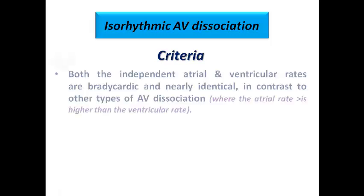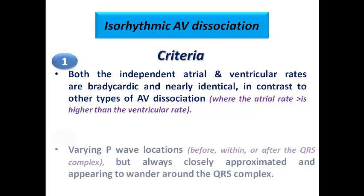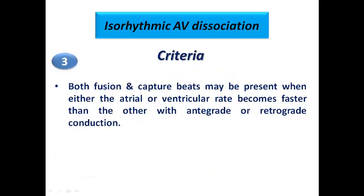Let's summarize the diagnostic criteria. First, the atrial rate and ventricular rate are equal — explaining the one-to-one AV relationship. Second, there is varying P-wave location: sometimes before, sometimes within, sometimes after the QRS complex, but always closely approximated and appearing to wander around it. Third, fusion or capture beats may occasionally be present when one rate becomes slightly faster than the other, allowing antegrade or retrograde conduction through the AV node and producing a different complex morphology.